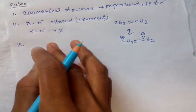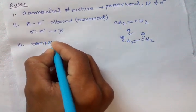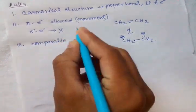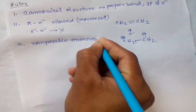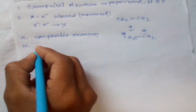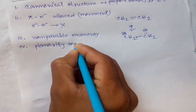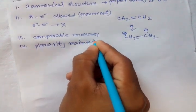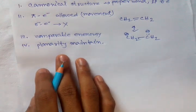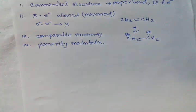Rule number three: resonating structures should have comparable energy. Rule number four: planarity must be maintained — that means all the atoms involved in resonance should lie in the same plane.